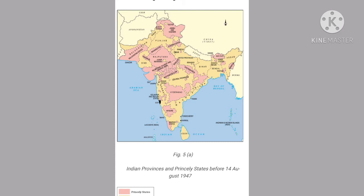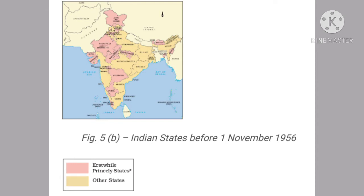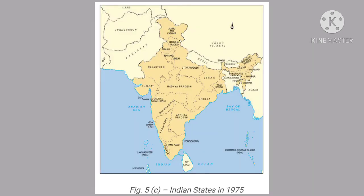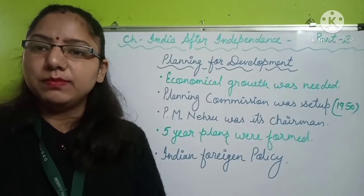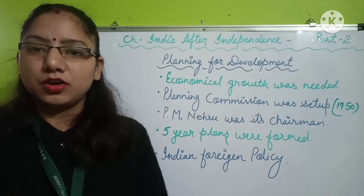Looking at three maps showing the making of linguistic states: the first map shows princely states and British India before 14th August 1947. The second map, before 1st November 1956, shows the princely states merging into other states. The third map shows Indian states in 1975 — no princely states remain; India is now formed as a united nation. The next problem for the independent country after state formation was economic growth, or planning for development.